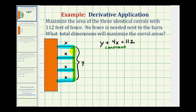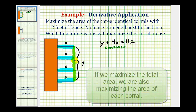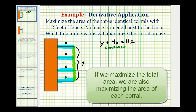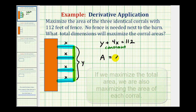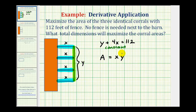Now we want to find the primary equation, or the equation that we want to maximize in this case. Since we want to maximize the area of these corrals, the total area would just be length times width, or in this case x times y. So our primary equation is going to be area equals x times y, and again this is the equation that we want to maximize.